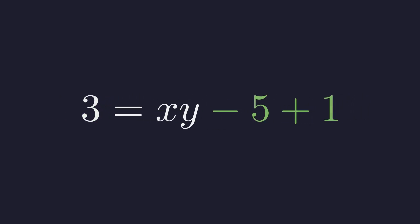Next, we simplify the constants on the right side. On the right, negative 5 plus 1 gives us negative 4. To isolate the product, we add 4 to both sides, which gives us 3 plus 4 equals x times y.